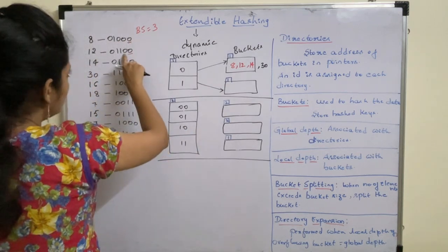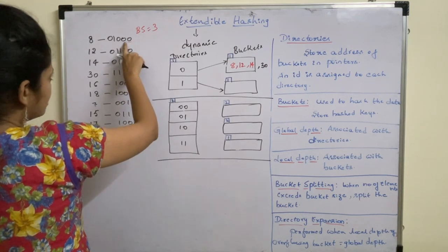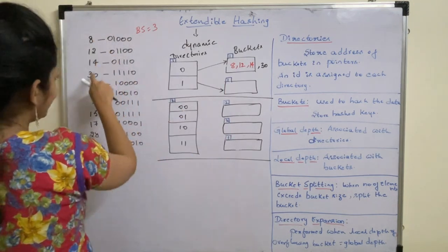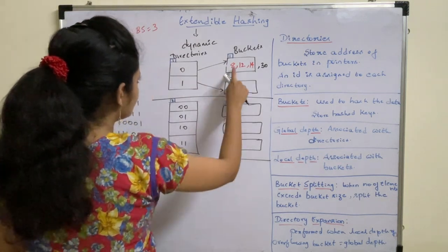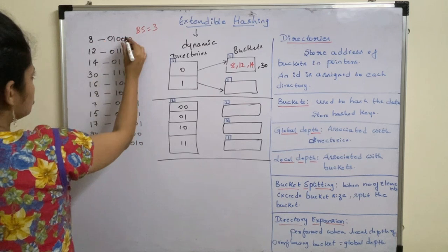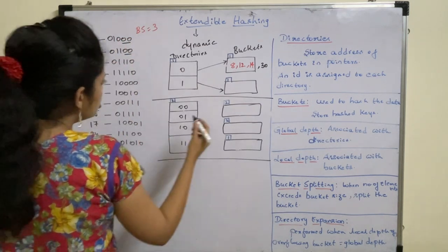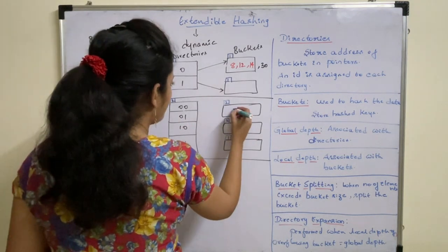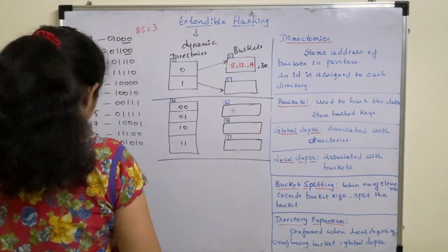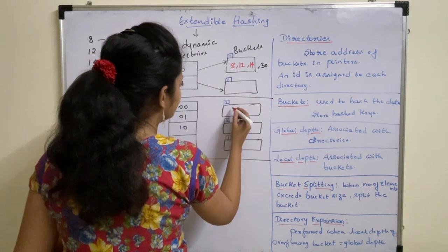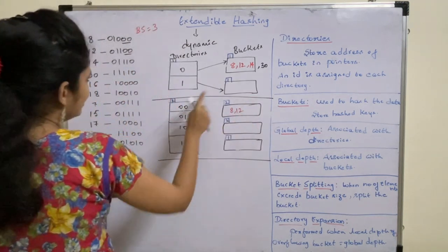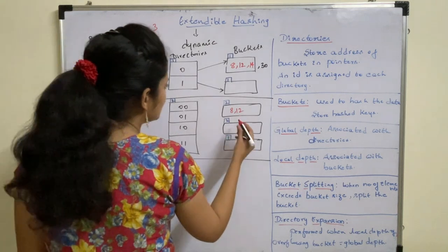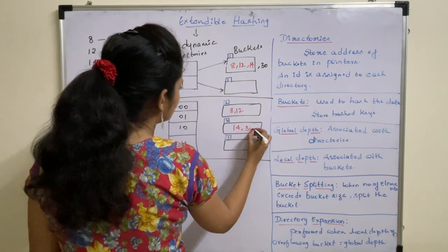Rehashing should be done. Earlier, by considering the last 1 bit, we inserted keys into the buckets. Now you need to check the last 2 bits of every number and then insert the values. Taking 8 and 12: their last 2 bits are 00 and 00 respectively, so you can insert them in the same bucket. For 40 and 30, the last 2 bits are 10 and 10, so place them in another bucket.